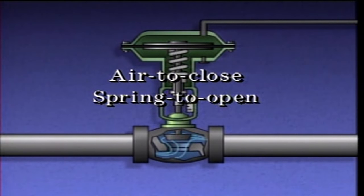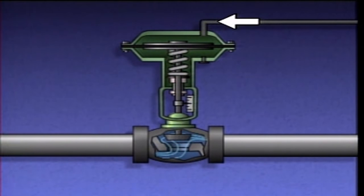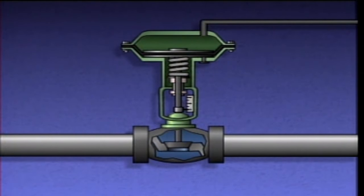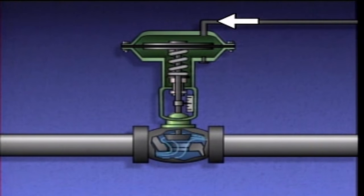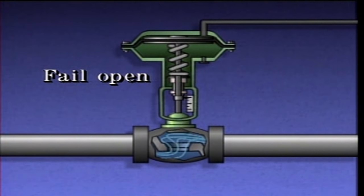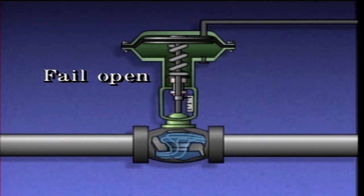This type of actuator can be called an air-to-close, spring-to-open actuator because air pressure moves the stem to close the valve and a spring moves the stem to open the valve. This means that if air pressure to the actuator is lost, the control valve connected to the actuator will fail open.